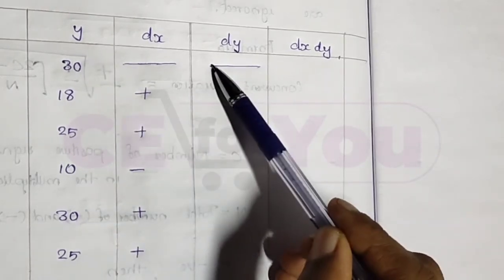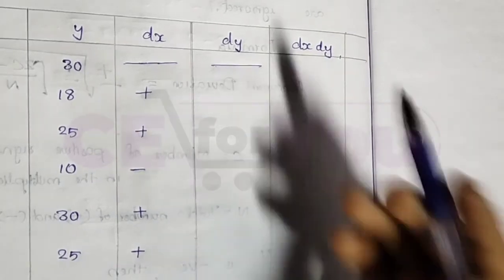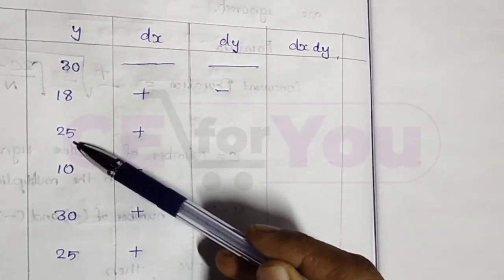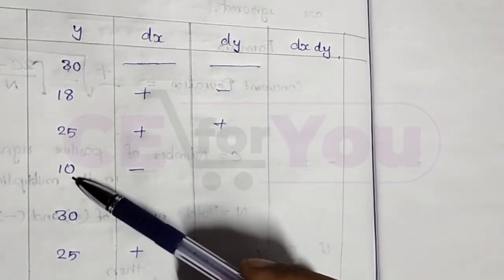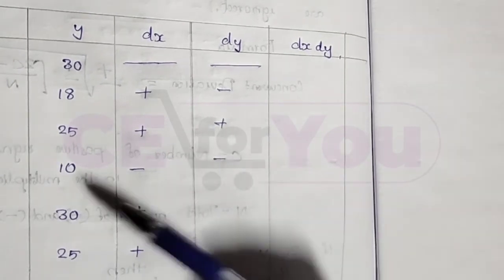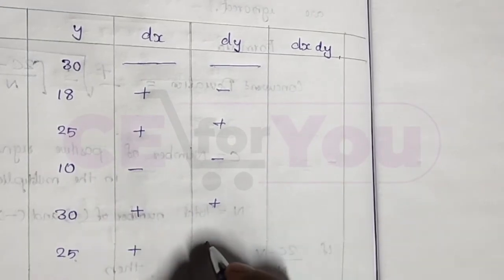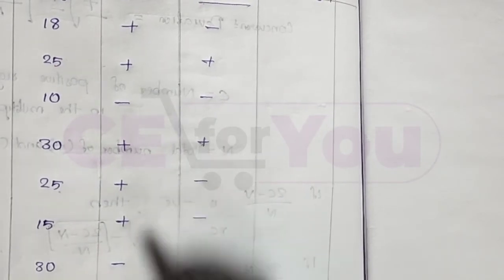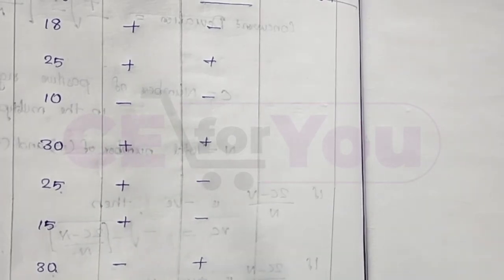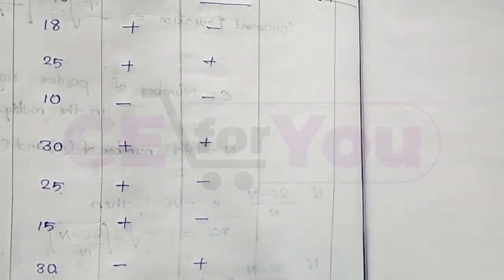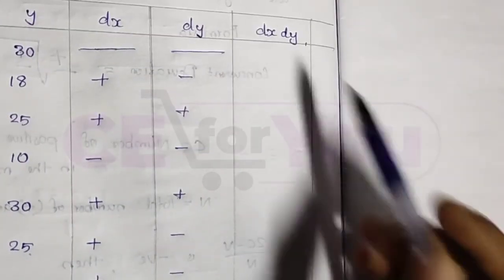Continuing: 30 and 18 give a minus sign. Then 18 and 25 give a plus sign. Then 25 and 10 give a minus sign. Then 10 and 29 give a minus sign. Then 30 gives a minus sign. Then 30 and 25: minus. Then 25 and 15: minus. Then 15 and 30: plus. Then 30 and 27: minus. Now we write the plus and minus signs in the dx and dy columns.